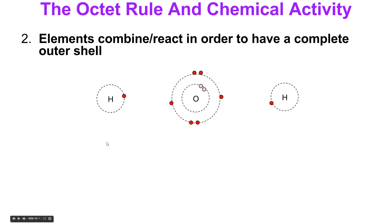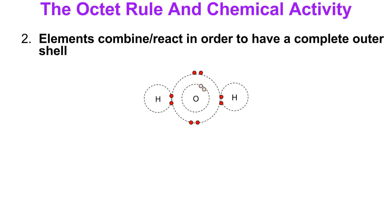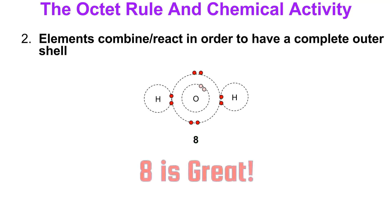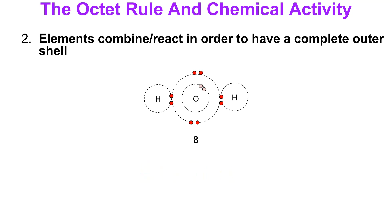Here's another example: hydrogen with one valence electron and oxygen with six. They don't have a complete shell, so right now they're pretty reactive. They go through a chemical reaction and combine to form a compound. In this compound, the oxygen has eight valence electrons — eight is great, so it's now unreactive. What about the hydrogens? Hydrogen has only a K shell, so hydrogen has a complete set with two. When the K shell is your only energy level, two will do.